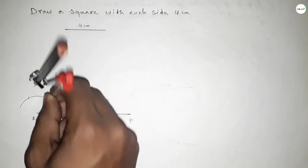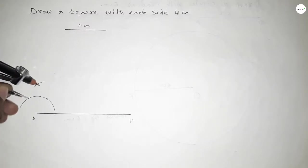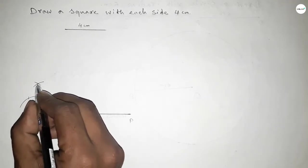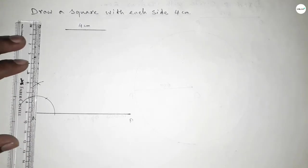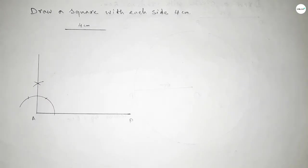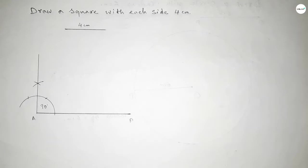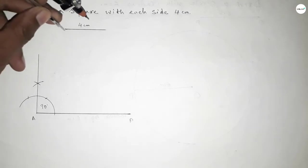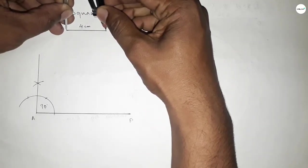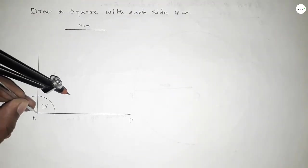With the same length, putting the compass here and cutting here, then cutting again with the same length. Drawing an arc so both curves intersect at a point. Joining this point gives a 90-degree angle.